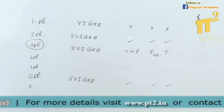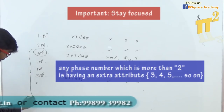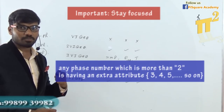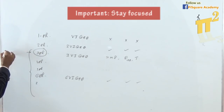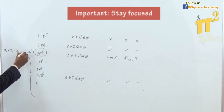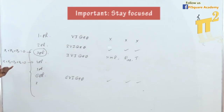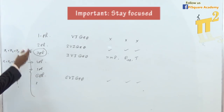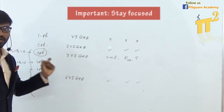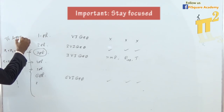Let me give you the answer. Phases 3, 4, 5, 6, 7 — these have a special attribute. If it is 3-phase and you add the first phase voltage or current, second phase voltage or current, and third phase voltage or current, it gives 0. The same is true for 4-phase: i1 + i2 + i3 + i4 = 0. And for 5-phase — all the same. This feature gives an advantage: transmission line losses are reduced by 50%, and transmission line voltage drop is also reduced by 50%.